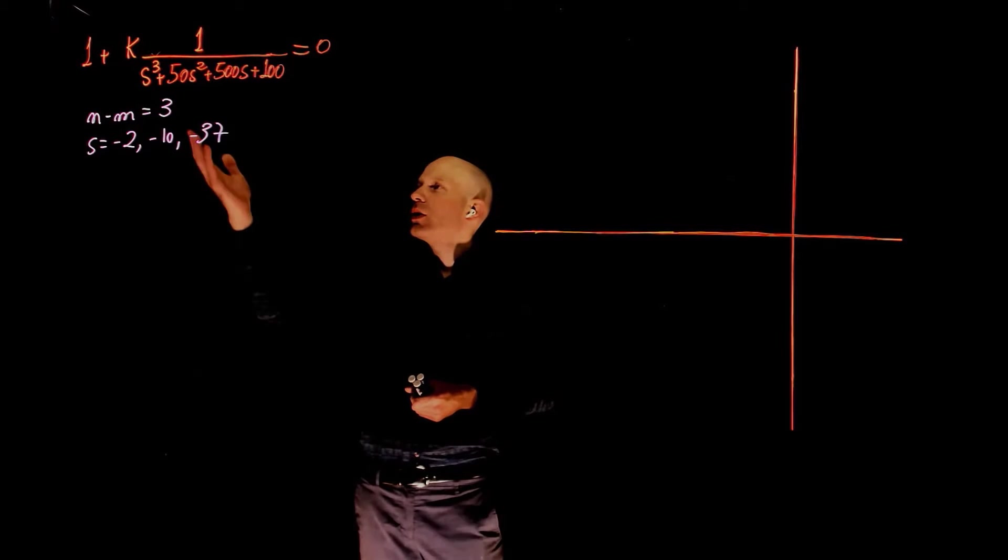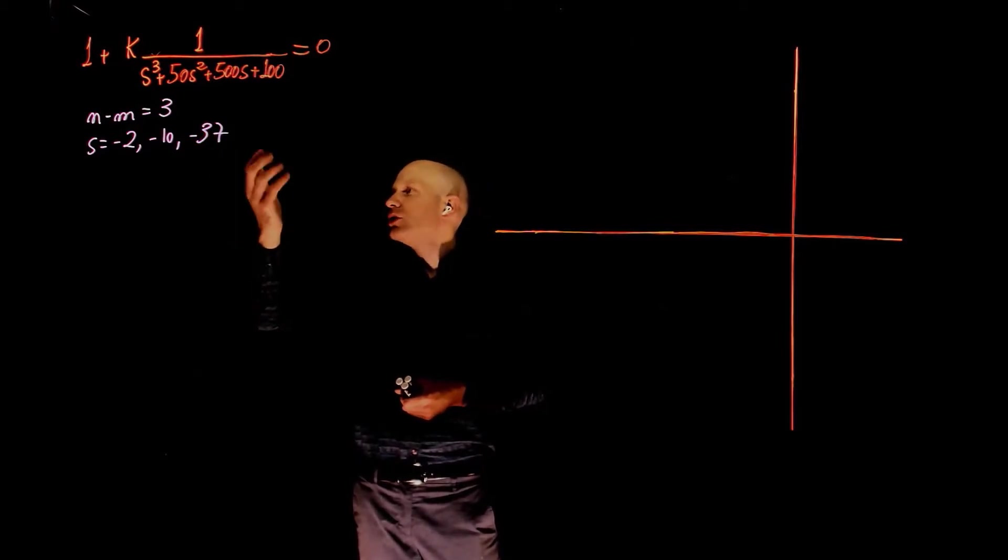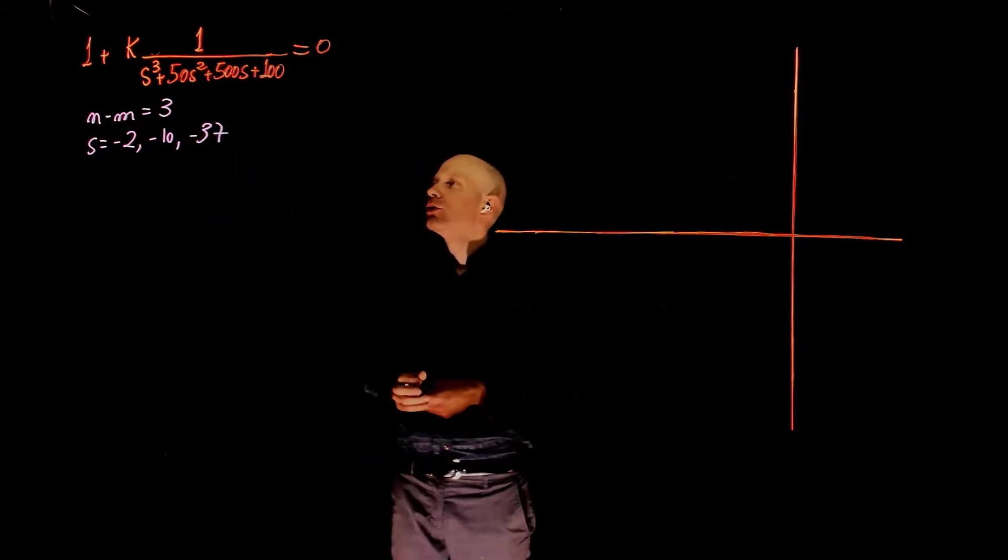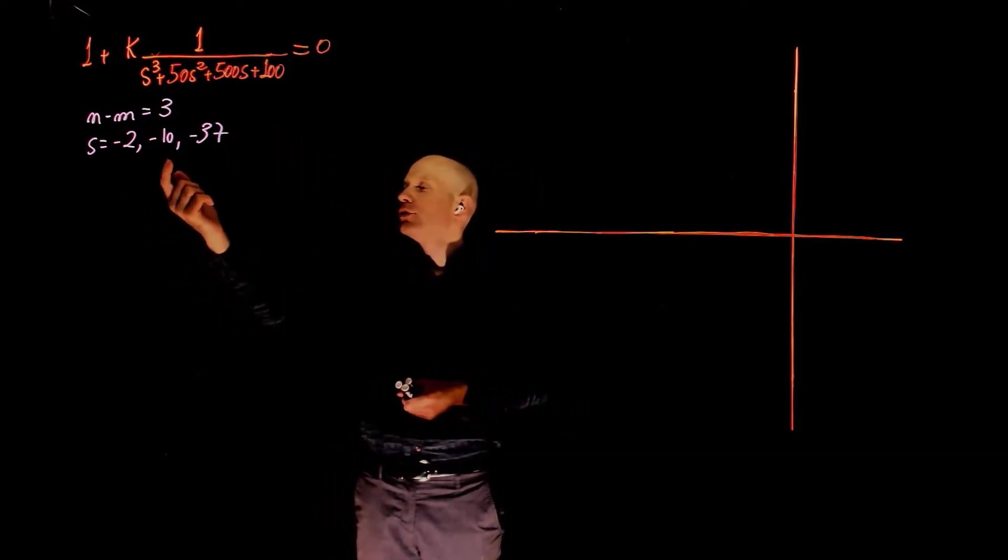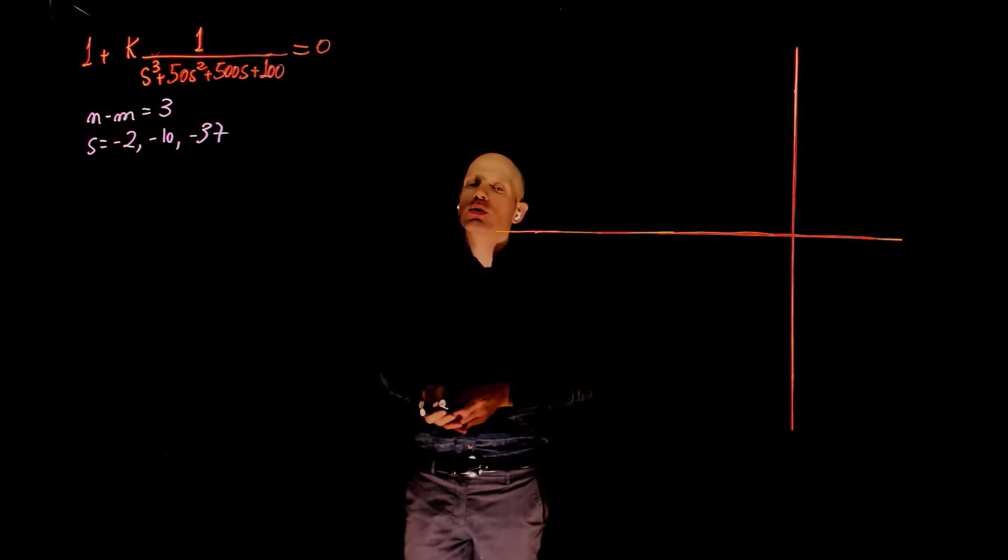The characteristic equation has three poles and no zero, so we have n minus m equals to 3, and the poles of this characteristic equation are given here: negative 2, negative 10, and negative 37, all real numbers.